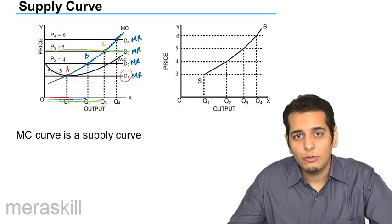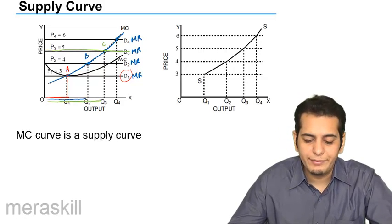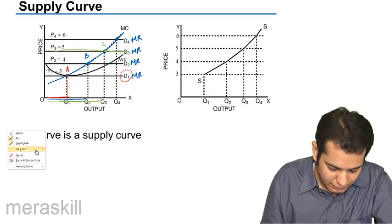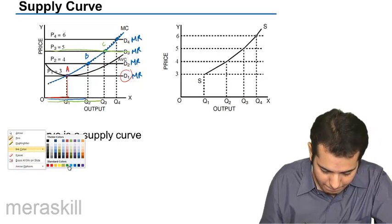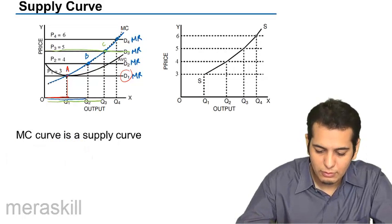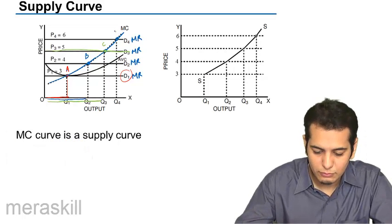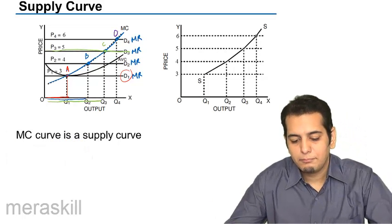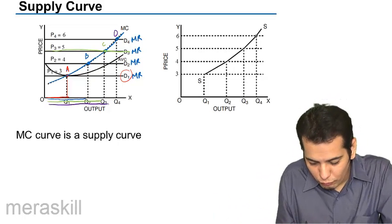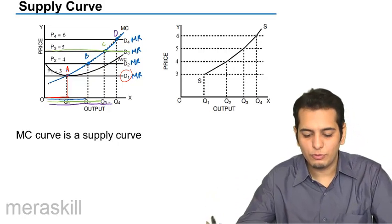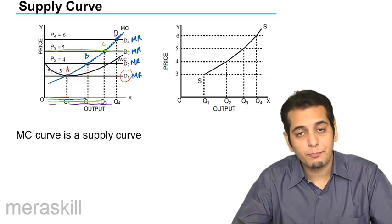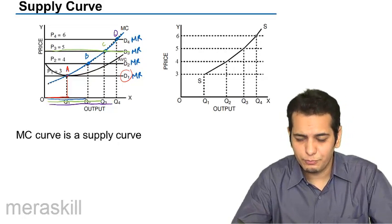In the same fashion, when the demand rises and the price rises to Rs 6, the firm should produce OQ4 amount of goods.